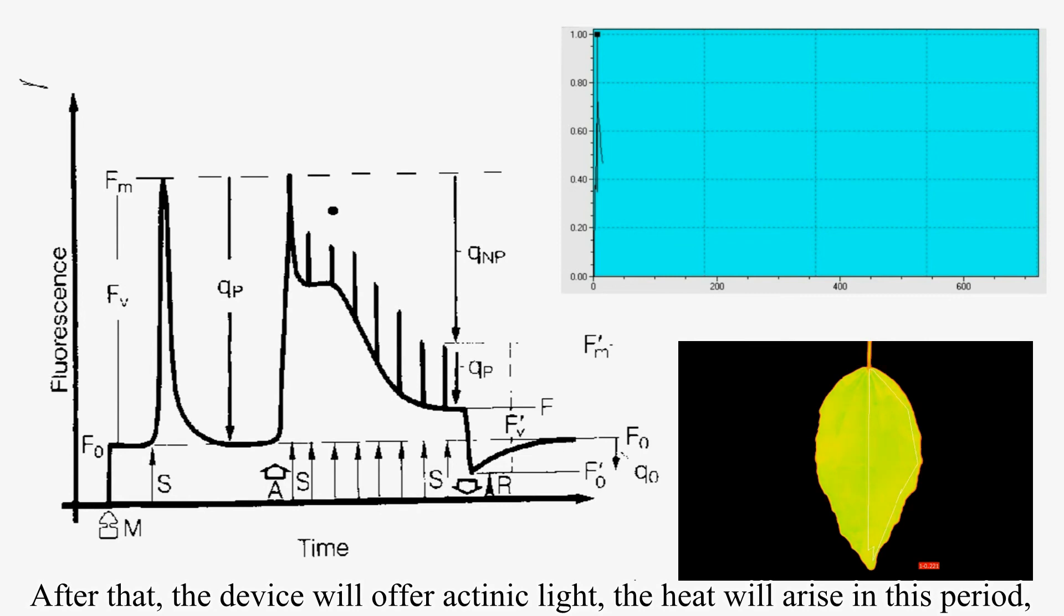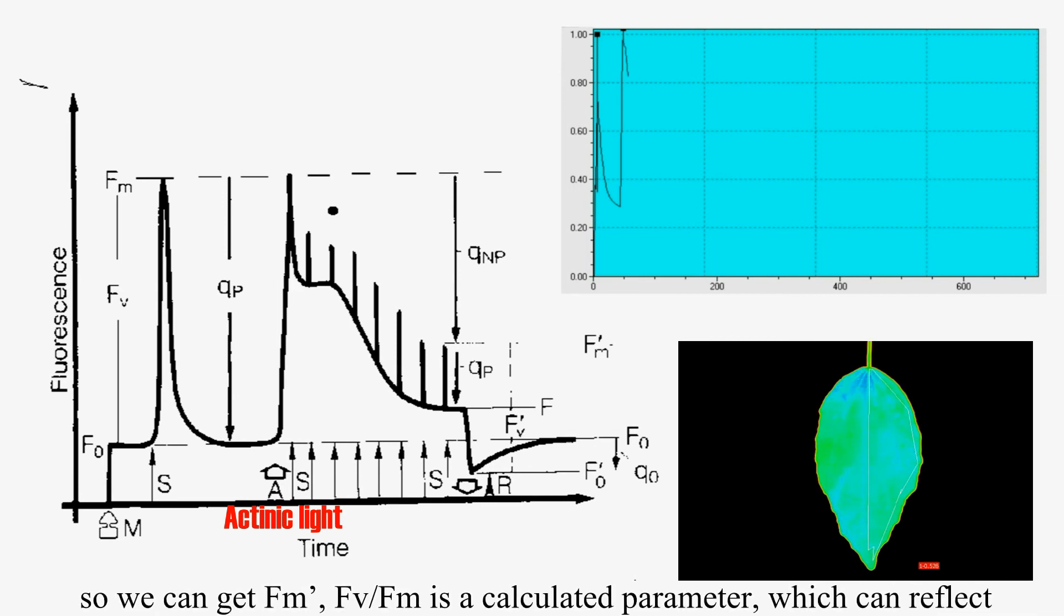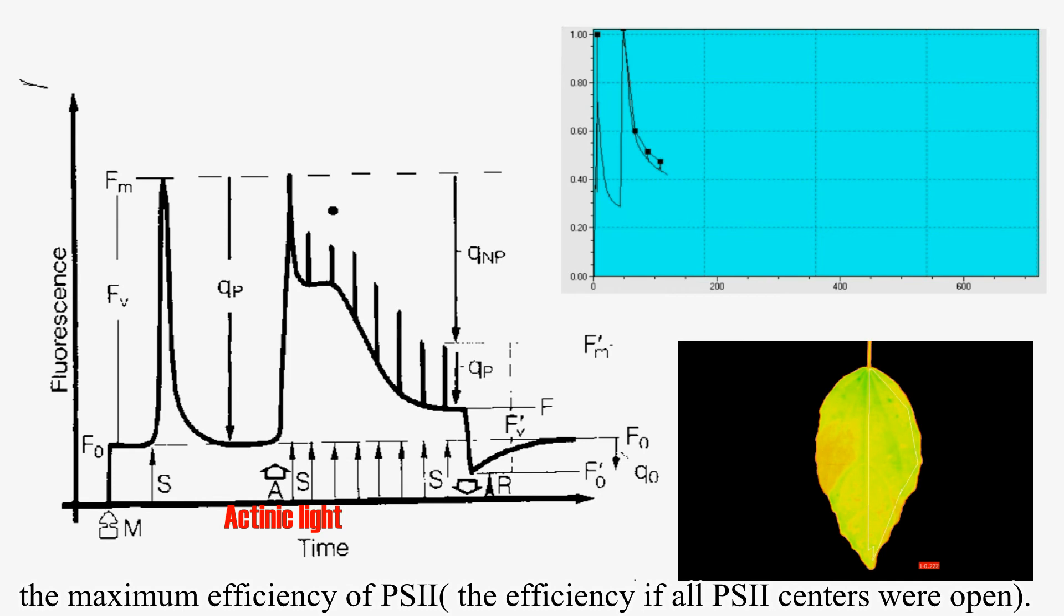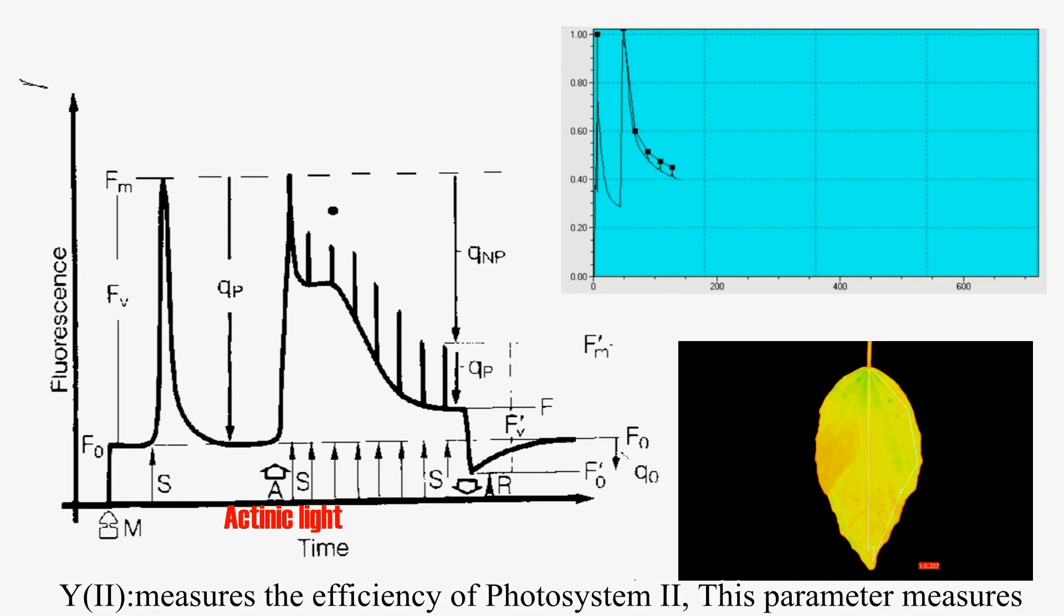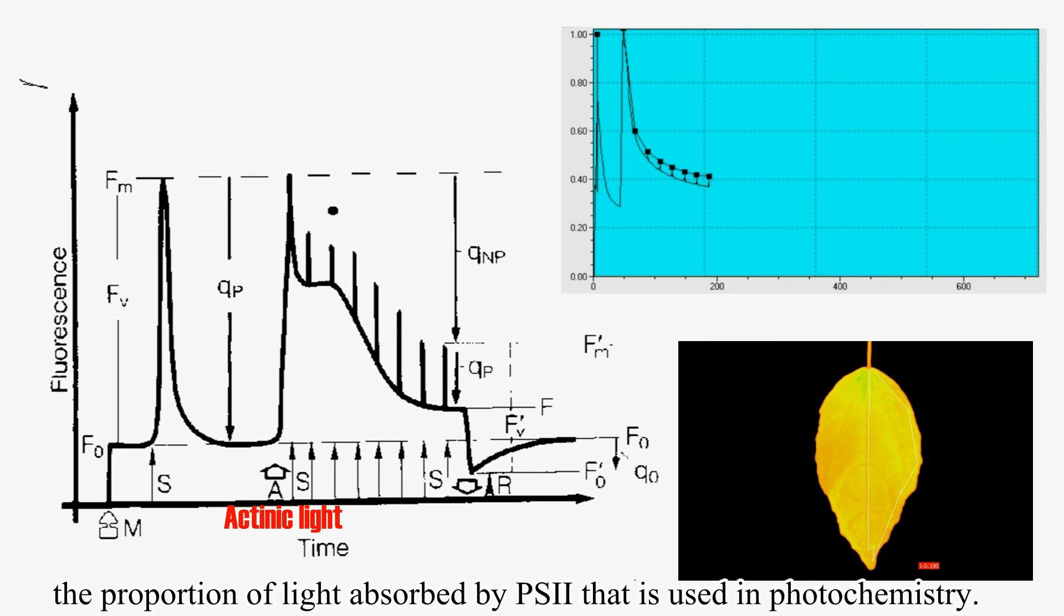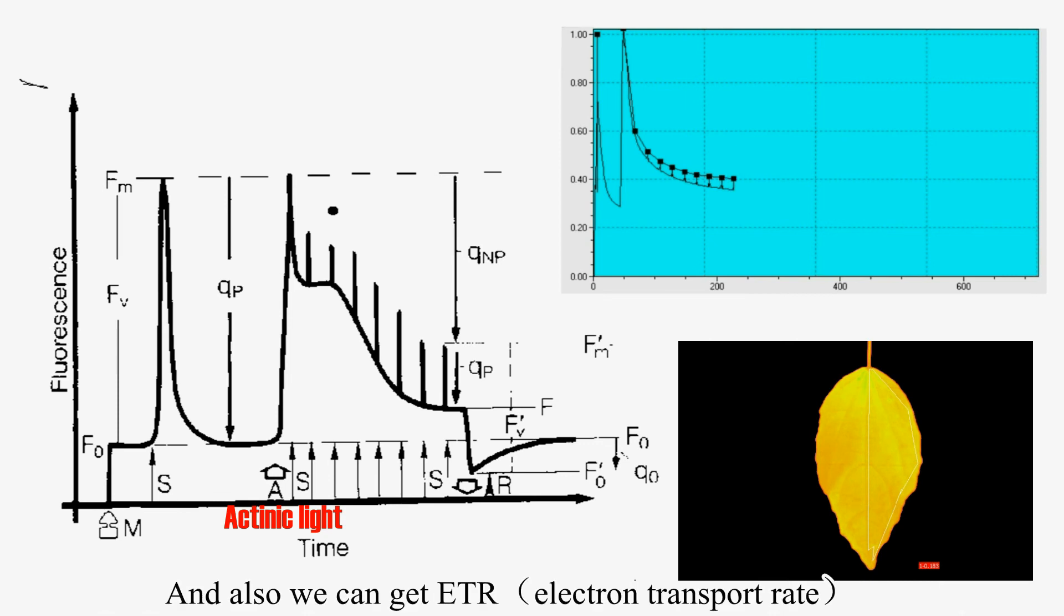After that, the device will offer actinic light. The heat will arise in this period. So we can get maximum fluorescence under light. FV/FM is a calculated parameter which can reflect the maximum efficiency of PSII. Yield of PSII measures the efficiency of photosystem 2. This parameter measures the proportion of light absorbed by PSII that is used in photochemistry. And also, we can get electron transport rate and non-photochemical quenching and so on.